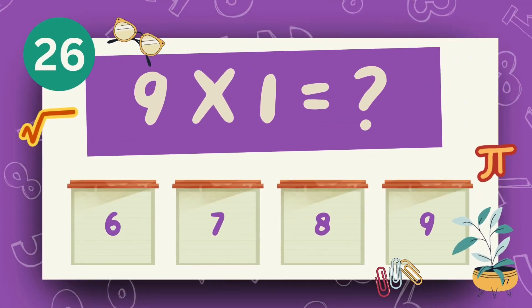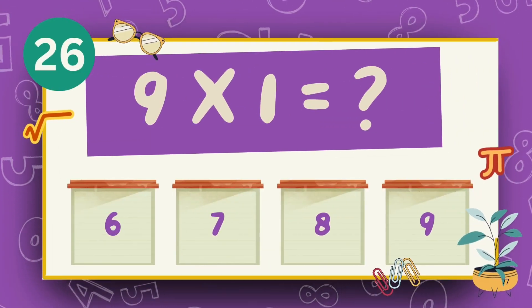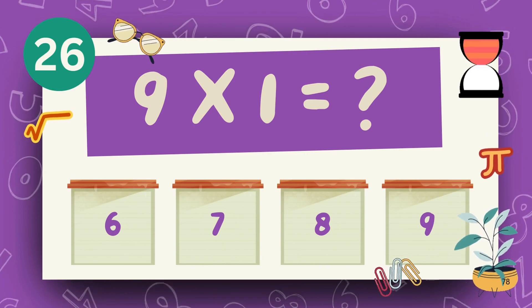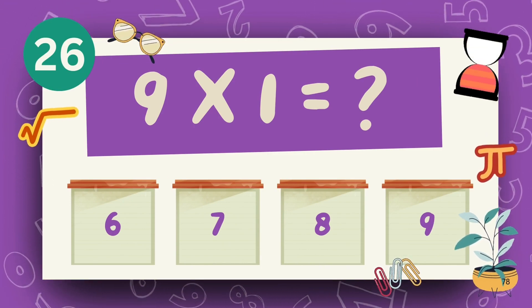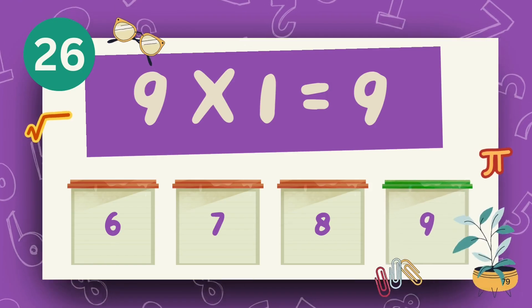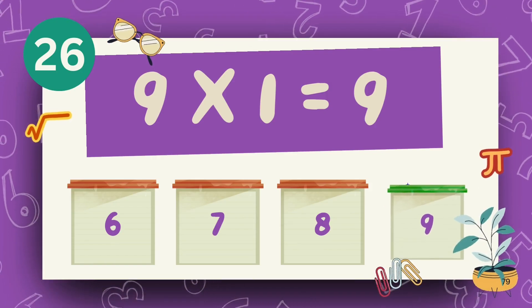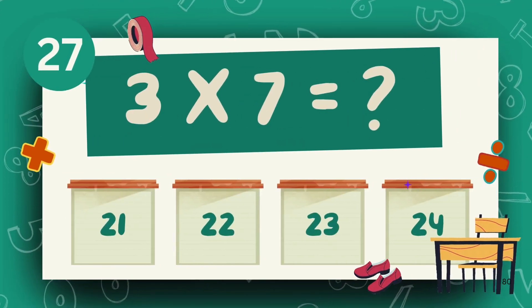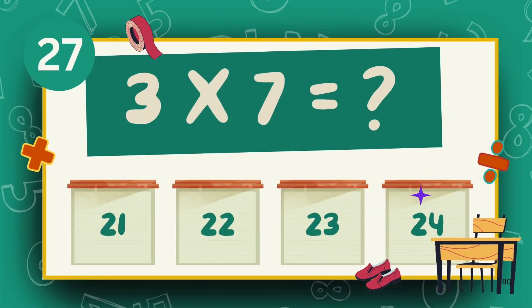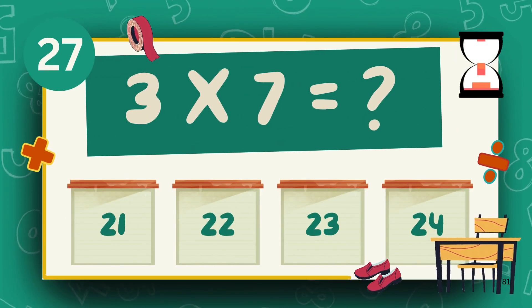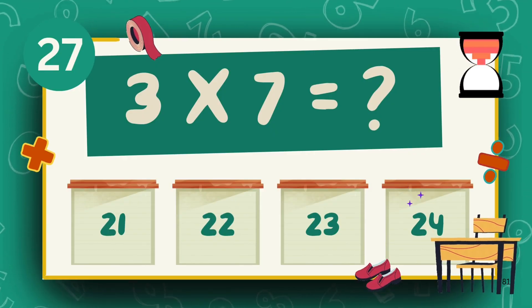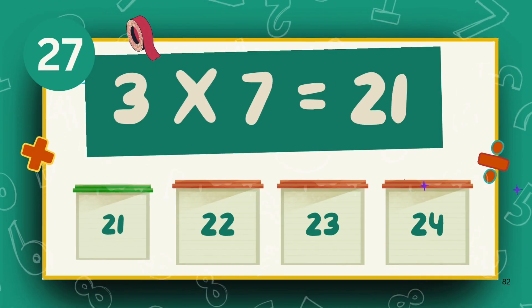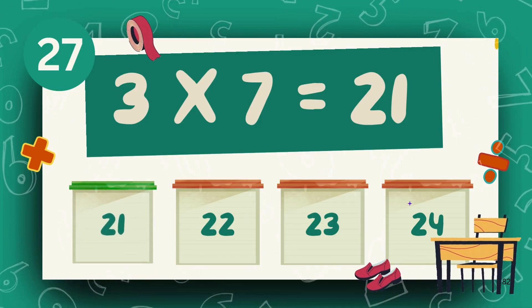What is 9 multiply 1? The answer is 9. What is 3 multiply 7? The answer is 21.